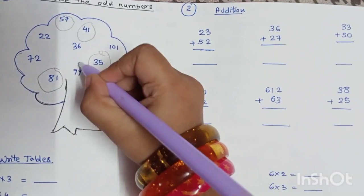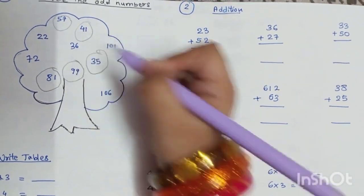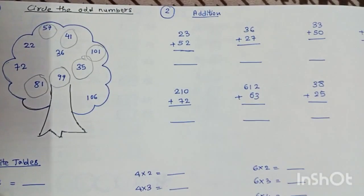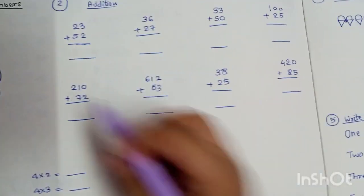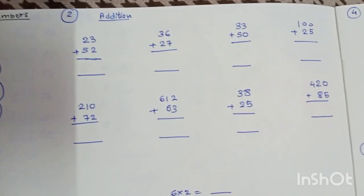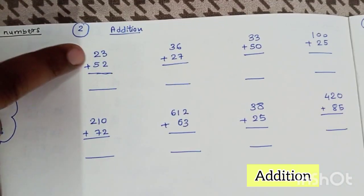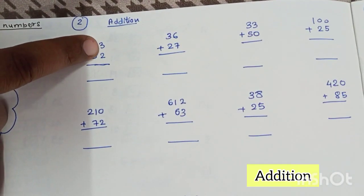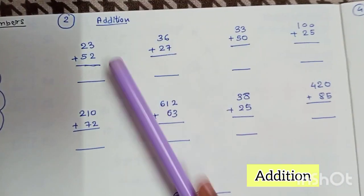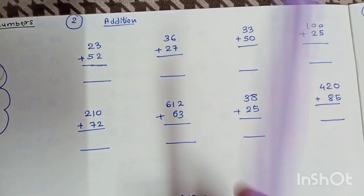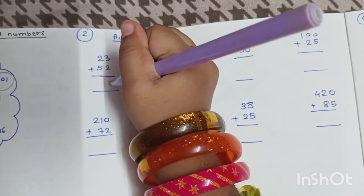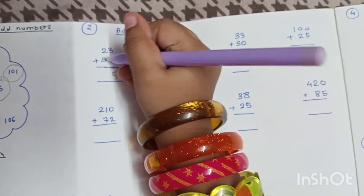81 and 99 is also an odd number, and 101 too, right? Now can we do simple addition? We start with the unit place first, then go to the tens place. Units: 3 plus 2 is equal to 5, and 5 plus 2...